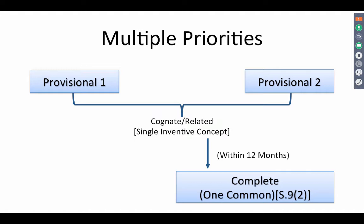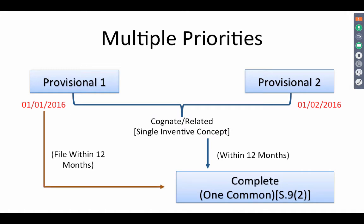Section 9.2 tells us you could file a common complete based on two provisionals. If you file the first provisional on 1-1-2016 and after a month you file the second provisional on 1-2-2016, your date for filing the complete begins from filing the first provisional. The complete has to be filed within 12 months of the first provisional, because the 12-month period starts from the first description.